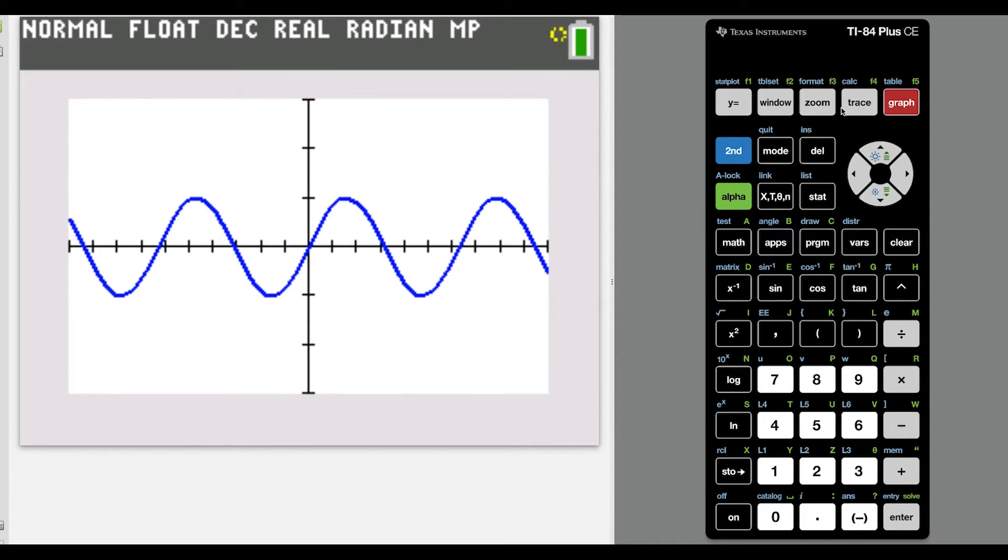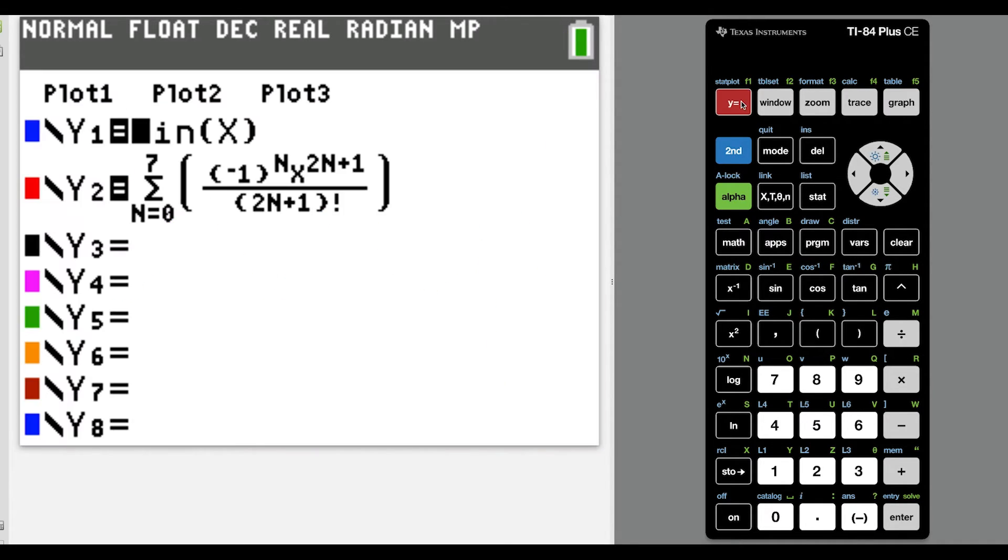So then my McLaurin or Taylor polynomial would be degree 15. And notice I cover this much of the sine x curve. So I'm covering almost all of it in this window.